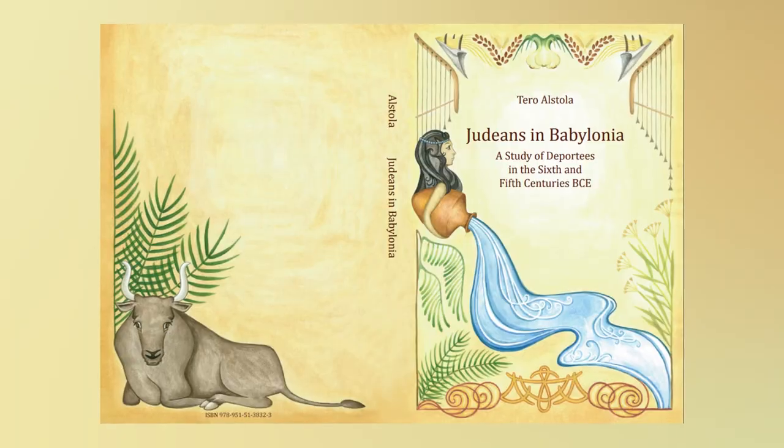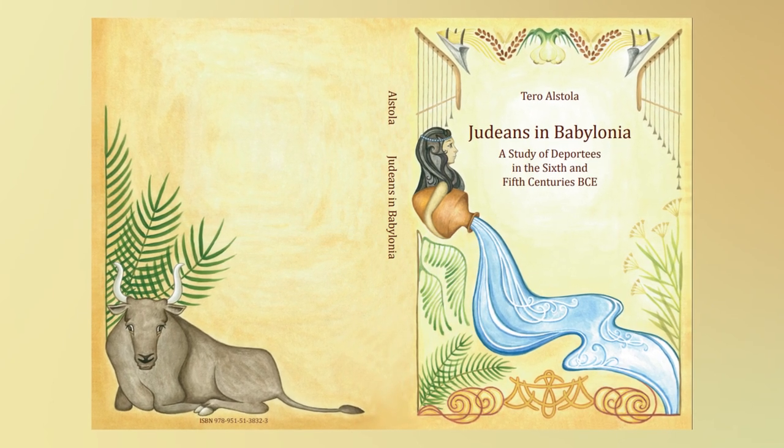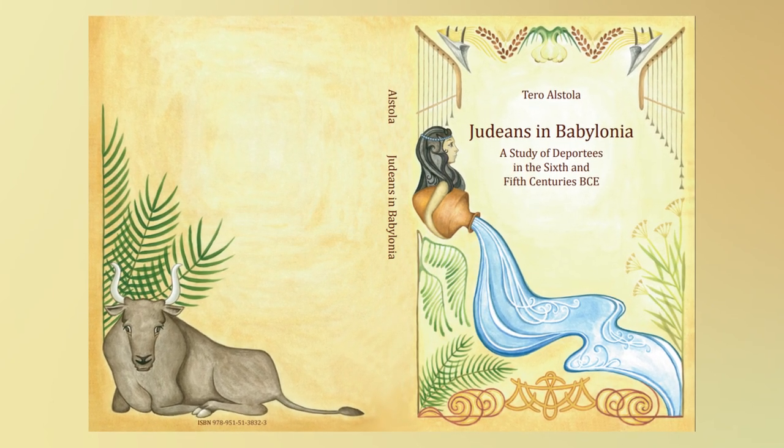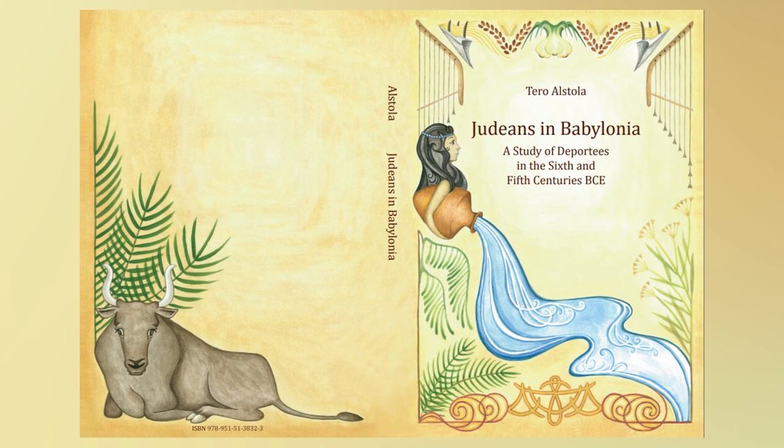One would like to think there is a strong continuity from the Neo-Assyrian to the Neo-Babylonian period, but sources from the Neo-Babylonian period are very scarce in general. However, we have one really interesting example on which we have a lot of sources: the fate of the kingdom of Judah in the early sixth century BCE.